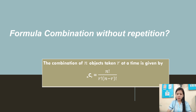So the formula of combination without repetition: the combination of n objects taking r at a time is given by C(n, r) = n factorial over r factorial times n minus r factorial.